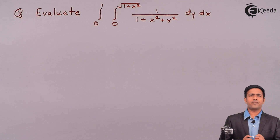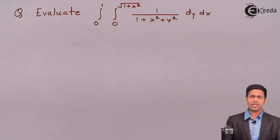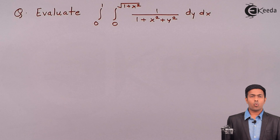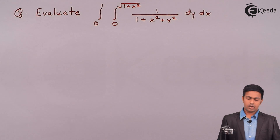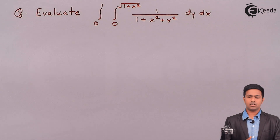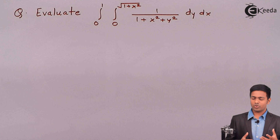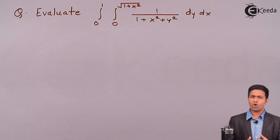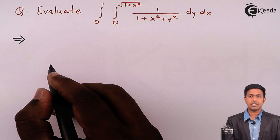Here we are going to see a problem based on the double integral and evaluate it. We have integration from 0 to 1, and the other integration is from 0 to root of 1 plus x square, and the function is 1 upon 1 plus x square plus y square, with respect to y and then x. The question is how to evaluate this integration. I'll consider this given integral as I.